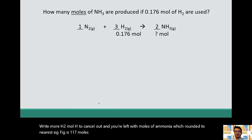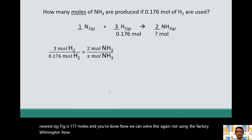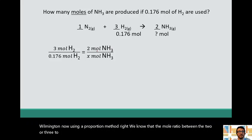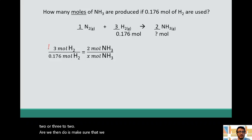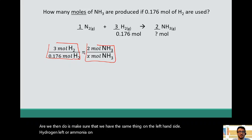Now we can solve this again, not using the Factor-Label method, now using a proportion method. Right? We know that the mole ratio between the two are 3 to 2. All we then do is make sure that we have the same thing on the left-hand side. Hydrogen is on the left or ammonia on the right. You cross multiply and solve for x. Another way to set this up.